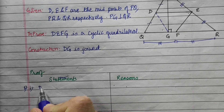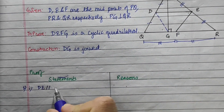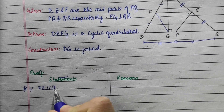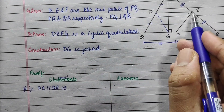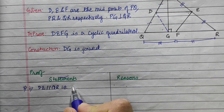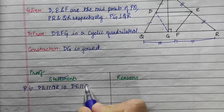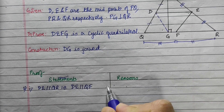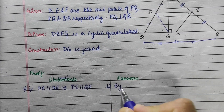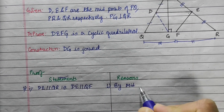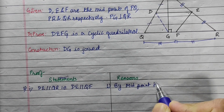DE is parallel to QR, which also means DE is parallel to QF, by the midpoint theorem.